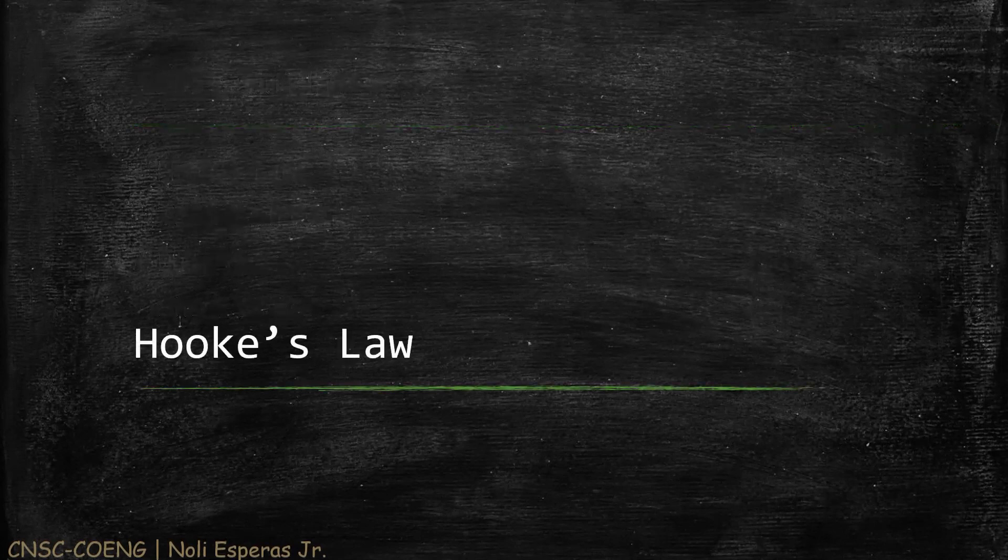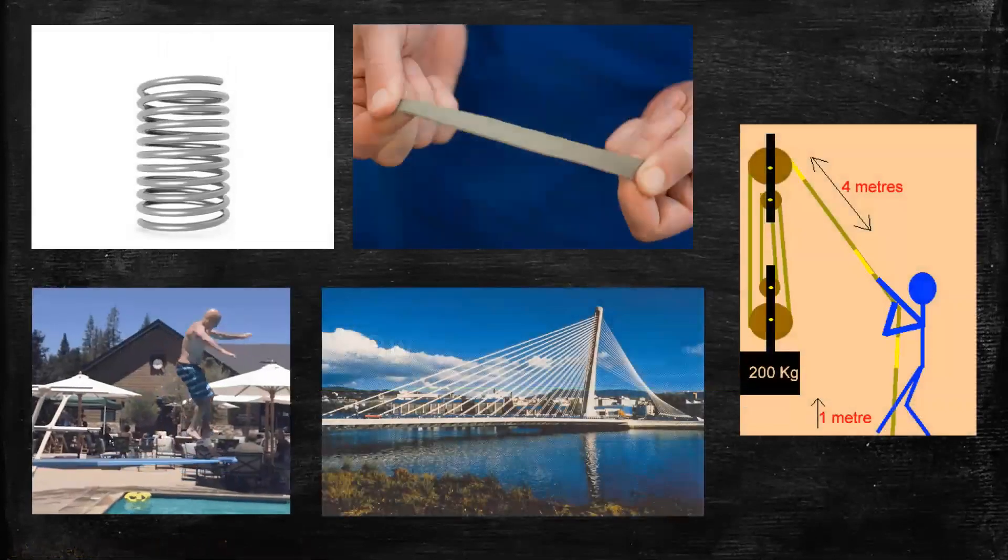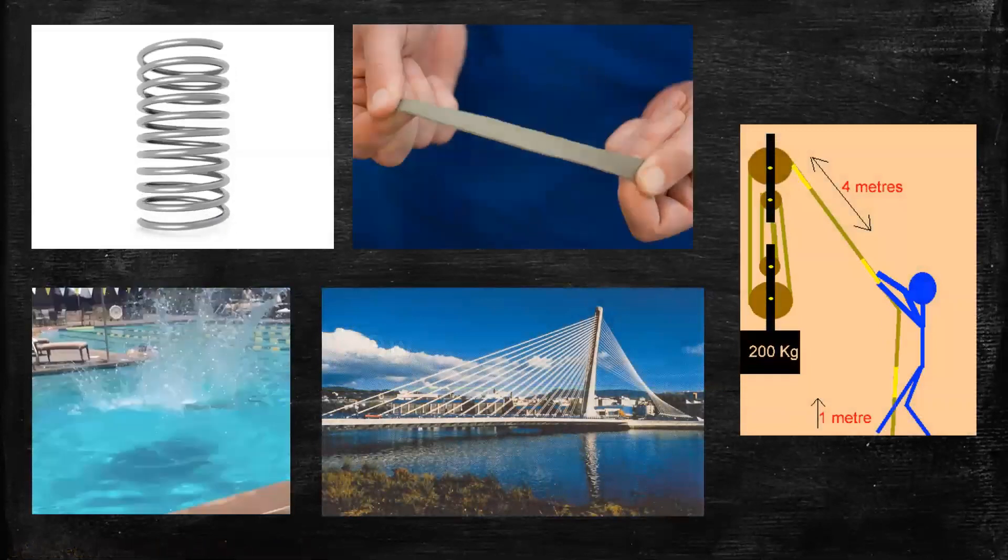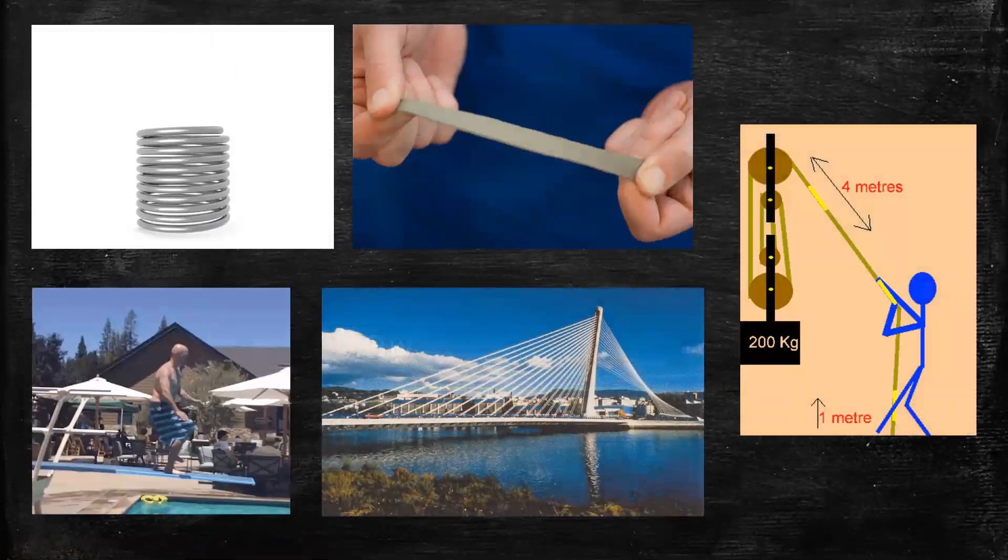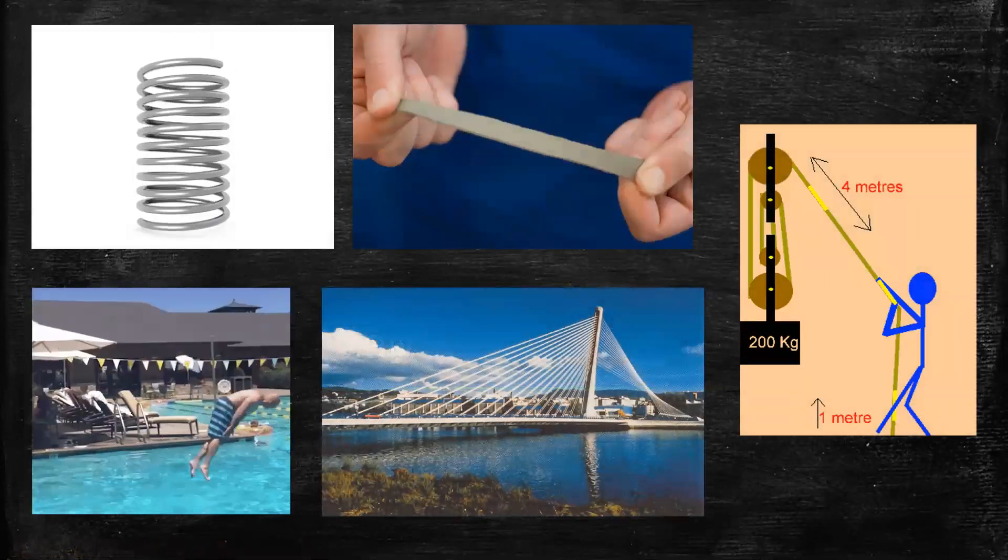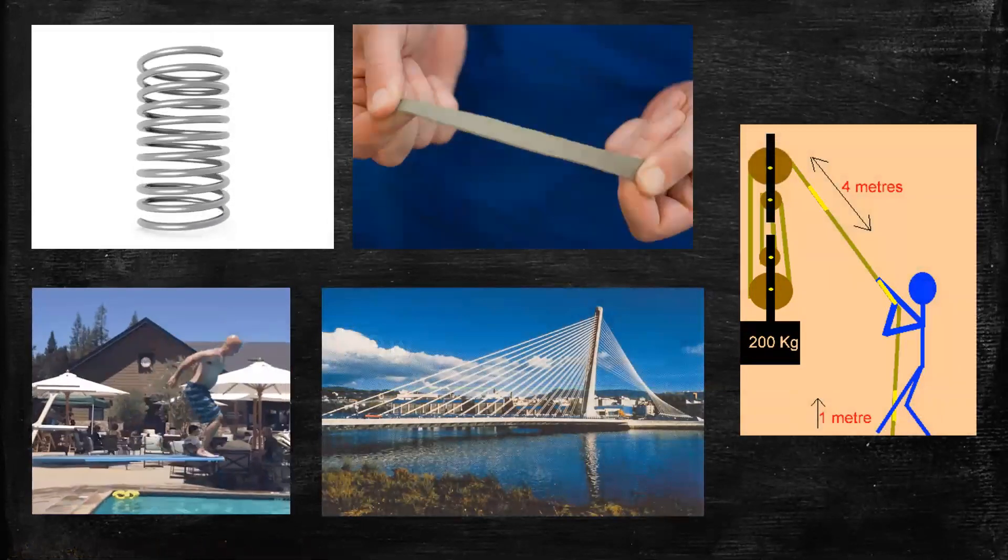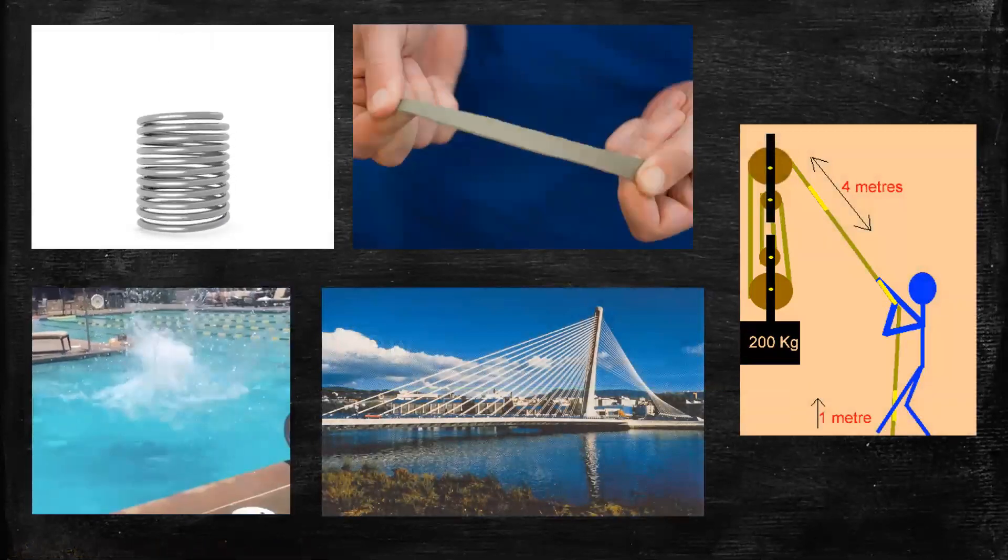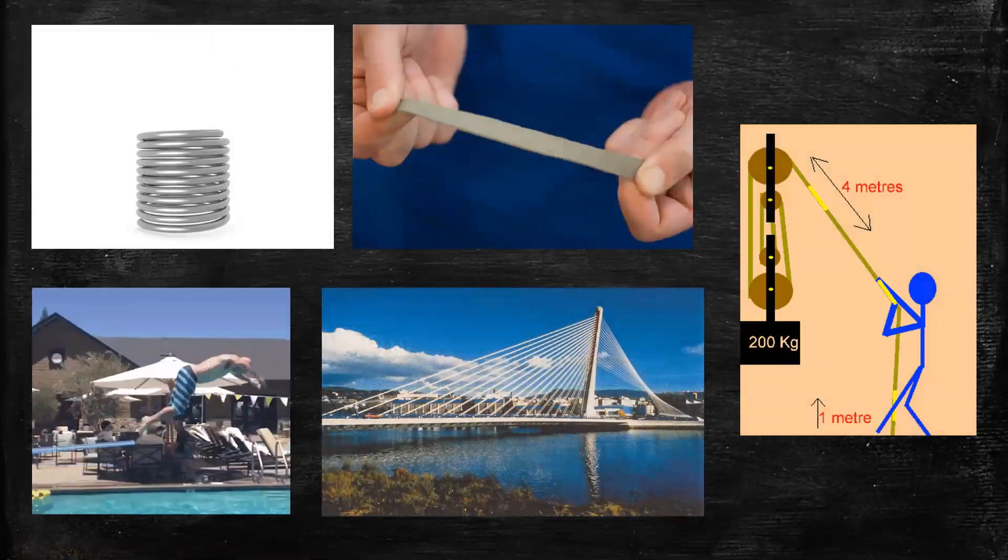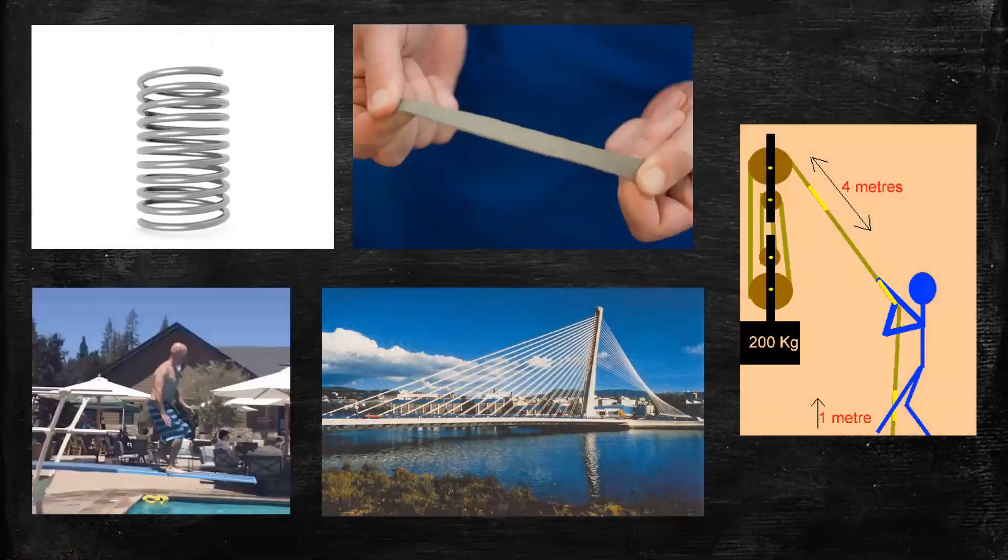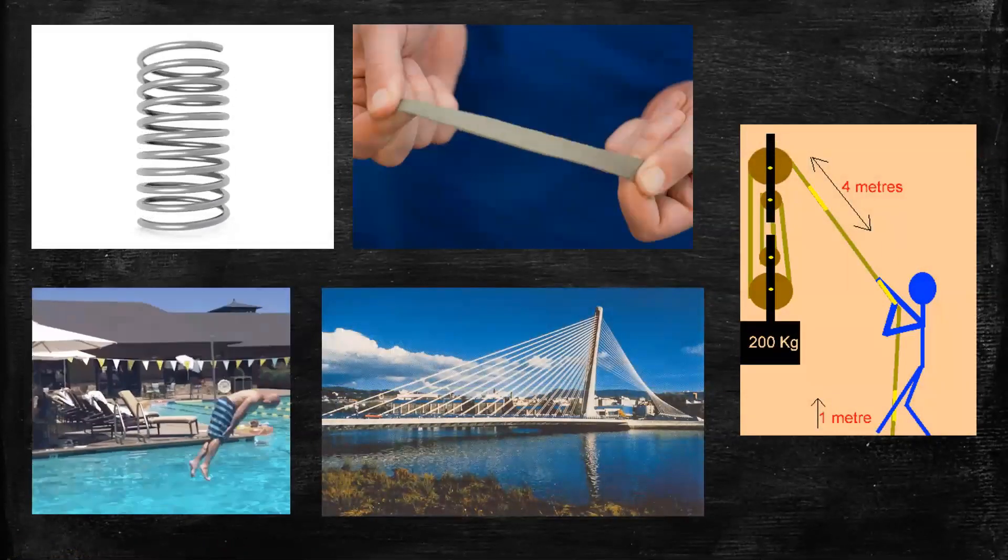We can observe that when we apply force to compress or stretch a spring and a rubber, a deformation to its shape occurs. But eventually, when we remove that force, it returns to its original shape or size.